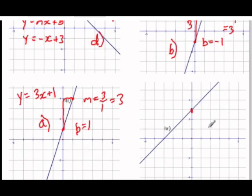And here the line crosses at positive 3 on the y-axis, and so b, our y-intercept, is 3. And every time we go up 1 we go over 1, because this is the next point in the grid, so our m is equal to 1 over 1, which is 1.